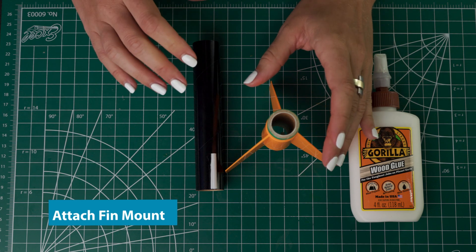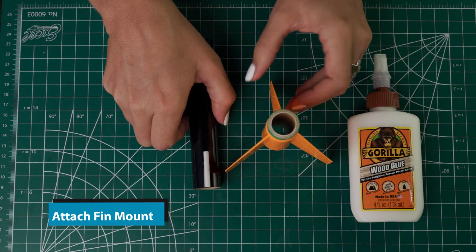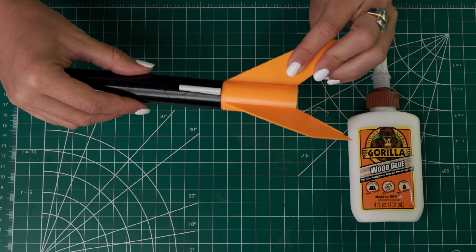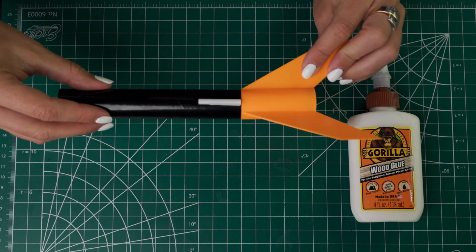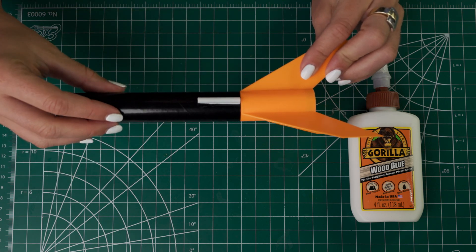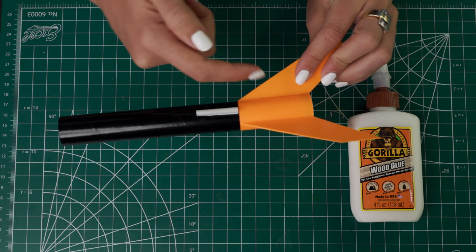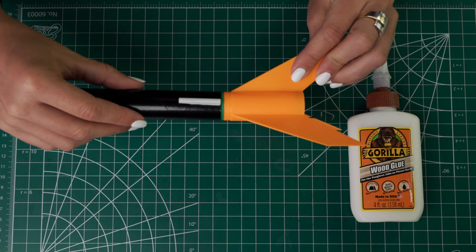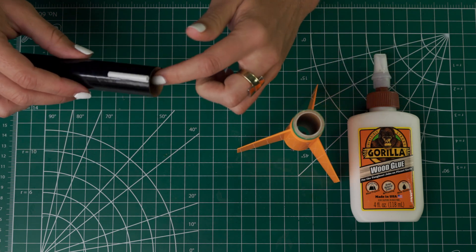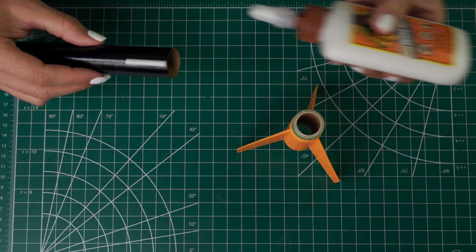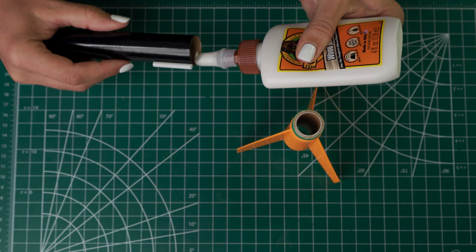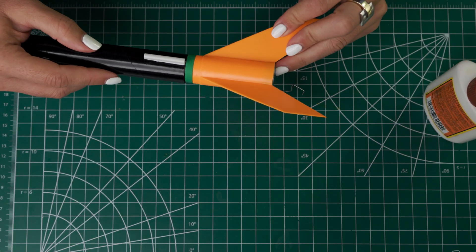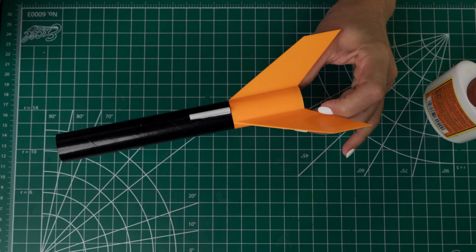Next up, we will attach this fin mount to the body tube. So as usual, we want to test fit before we glue. So this will go there and you're going all the way down to the bottom of those fins. And you want to center your launch lug between the two fins so that it can slide onto the launch rod. So that is test fit. And then we're going to add some glue to the inside of the body tube and put it on. And then let that dry.